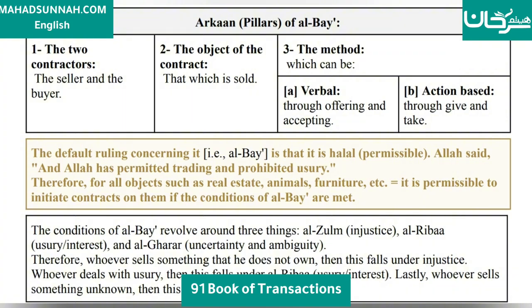Therefore, whoever sells something that he does not own falls under injustice. Whoever deals with usury is falling under riba (usury/interest). Lastly, whoever sells something unknown, then it comes under al-gharar.